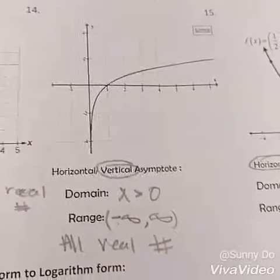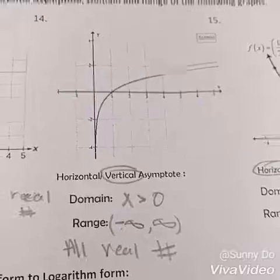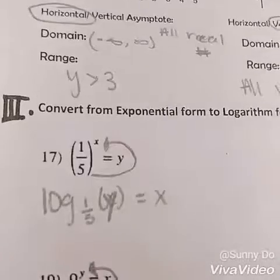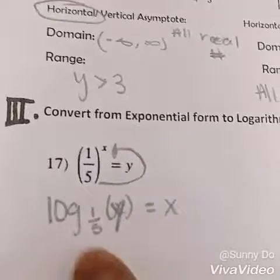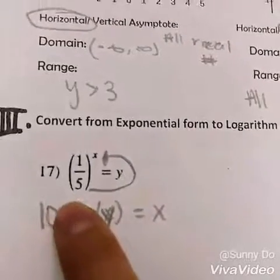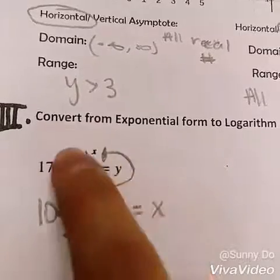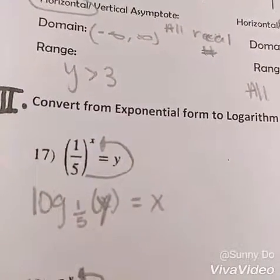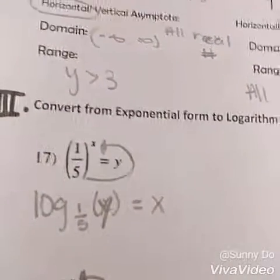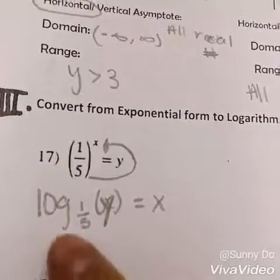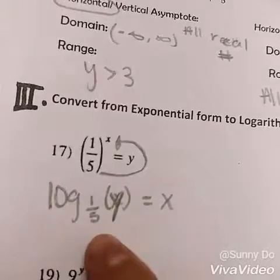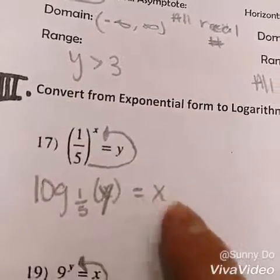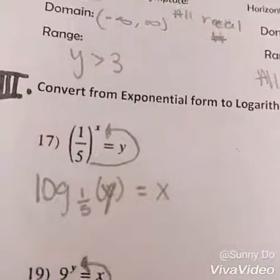Part 3 is the opposite of part 1. What you do is you just start with your base, go to the other side, back over here. So you write log base 1 over 5 of y equals x.